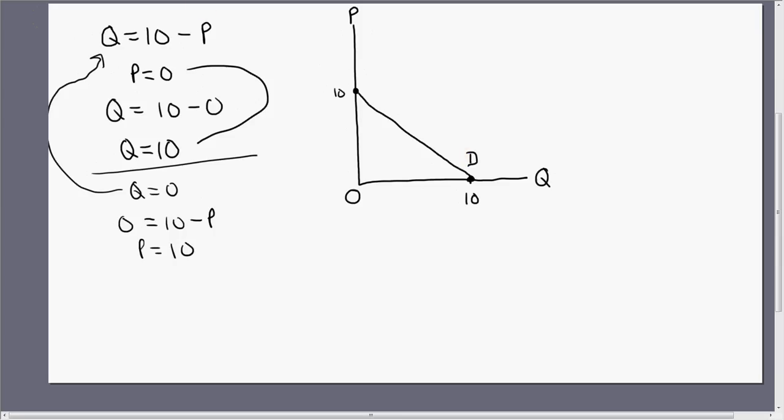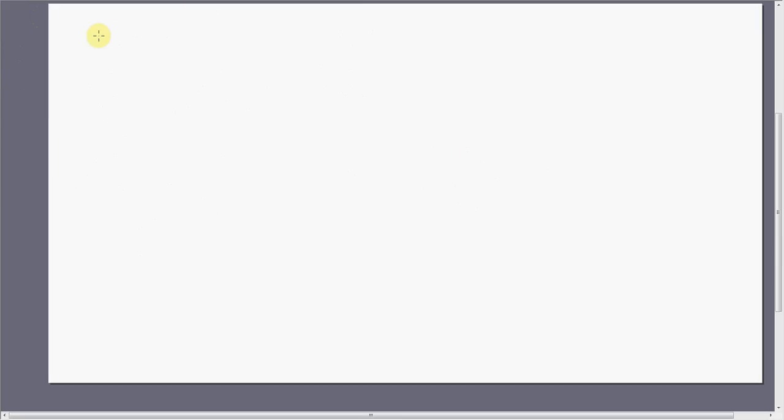Let's do some more examples. This linear demand curve is given by Q equals 200 minus 1 half P, the price. We're going to do the same thing. Let's first let P equal 0. If P equals 0, Q equals 200. We've got our first coordinate on this demand curve.